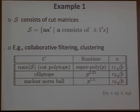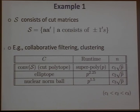The first example is motivated by collaborative filtering and clustering, where the signal set S consists of rank-one matrices of ±1 entries — outer products of ±1 vectors. The best convex relaxation is the convex hull of S, called the cut polytope. Projecting onto this polytope requires superpolynomial time — if you could do it in polynomial time, you could solve max-cut in polynomial time. In principle though, if you could project onto this polytope, you'd need only order √p samples to obtain a risk-one estimate.